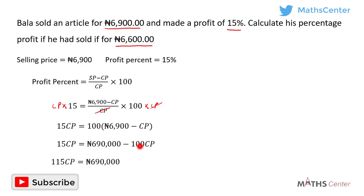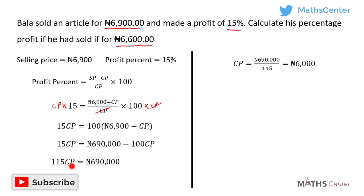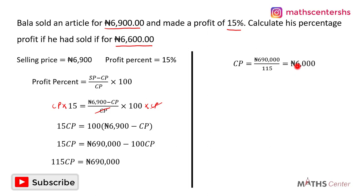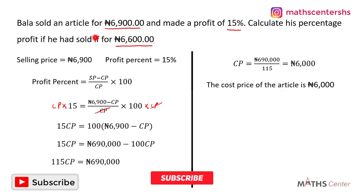Grouping like terms, we move 100CP to the left side: 15CP + 100CP = 690,000, which gives us 115CP = 690,000. Dividing both sides by 115, the cost price equals 690,000 ÷ 115, which gives us 6,000 Naira.